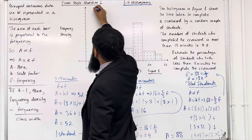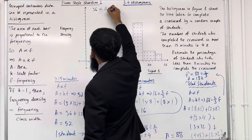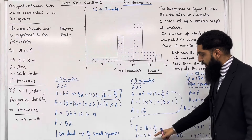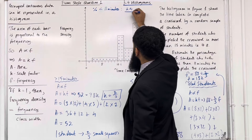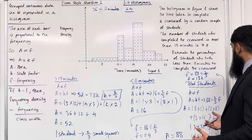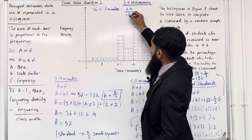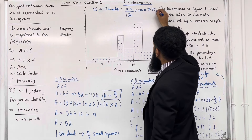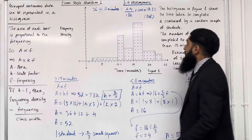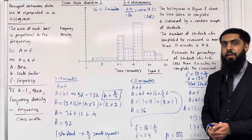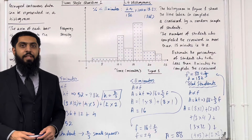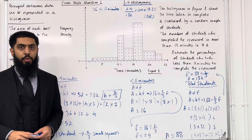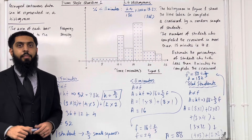Now I can calculate the percentage of students who took less than 11 minutes. Less than 11 minutes represents 24 students, so we have 24 divided by 132, multiplied by 100, which gives 18.2% to 3 significant figures. In statistics, we round to 3 significant figures. That completes exam-style question 1. With histograms, it is very important that you start by finding the K value — once you've got your K value, you can work out any frequency.